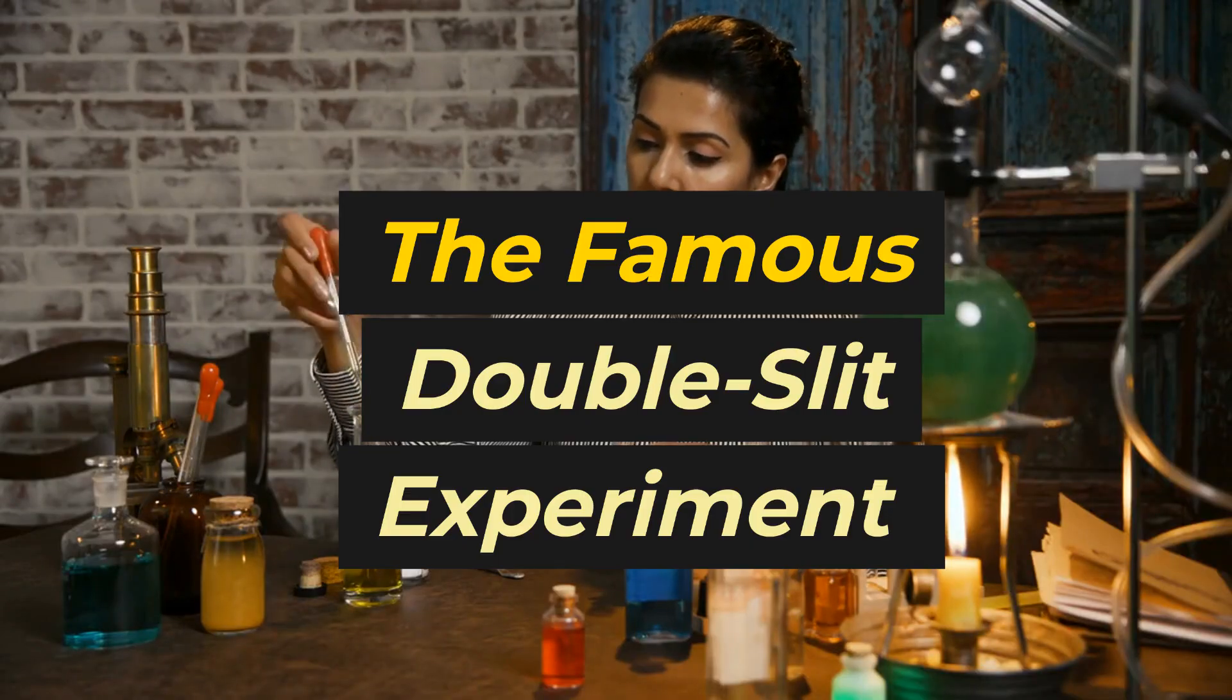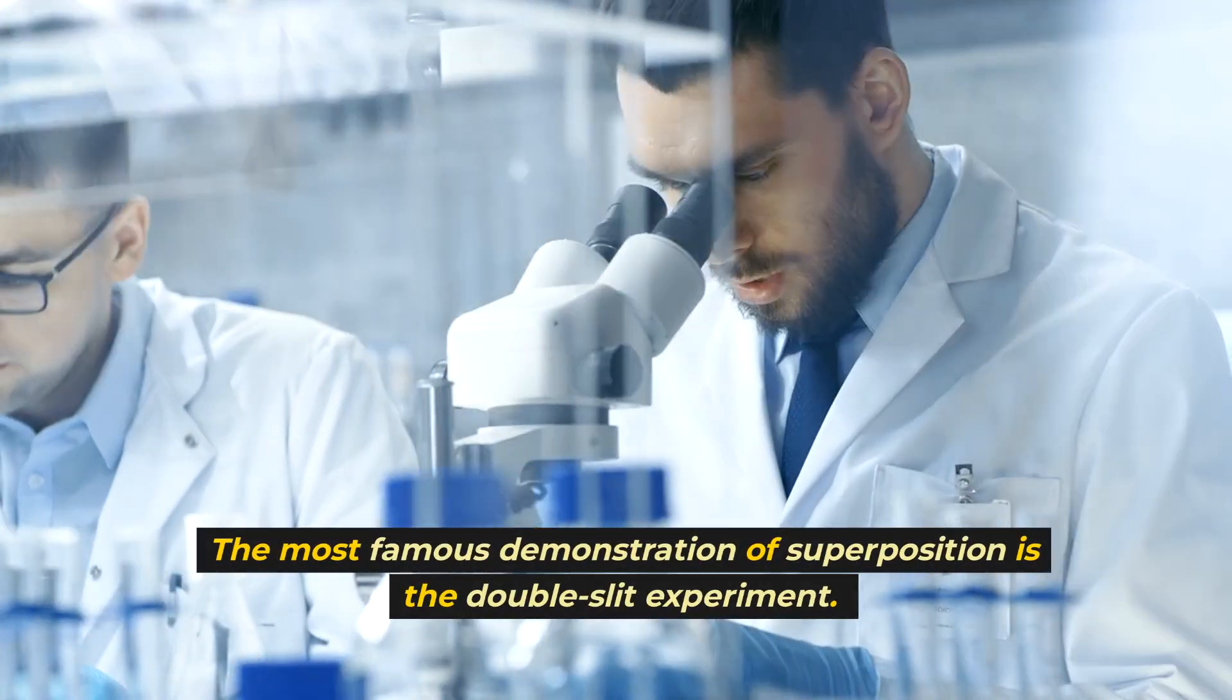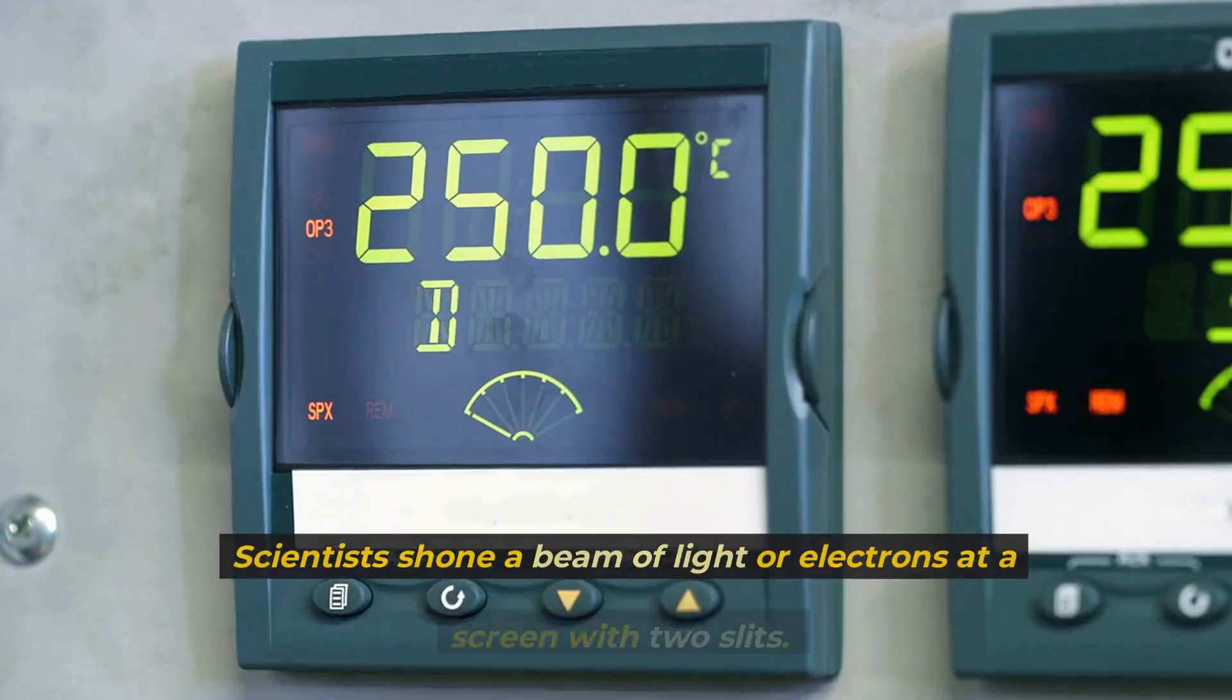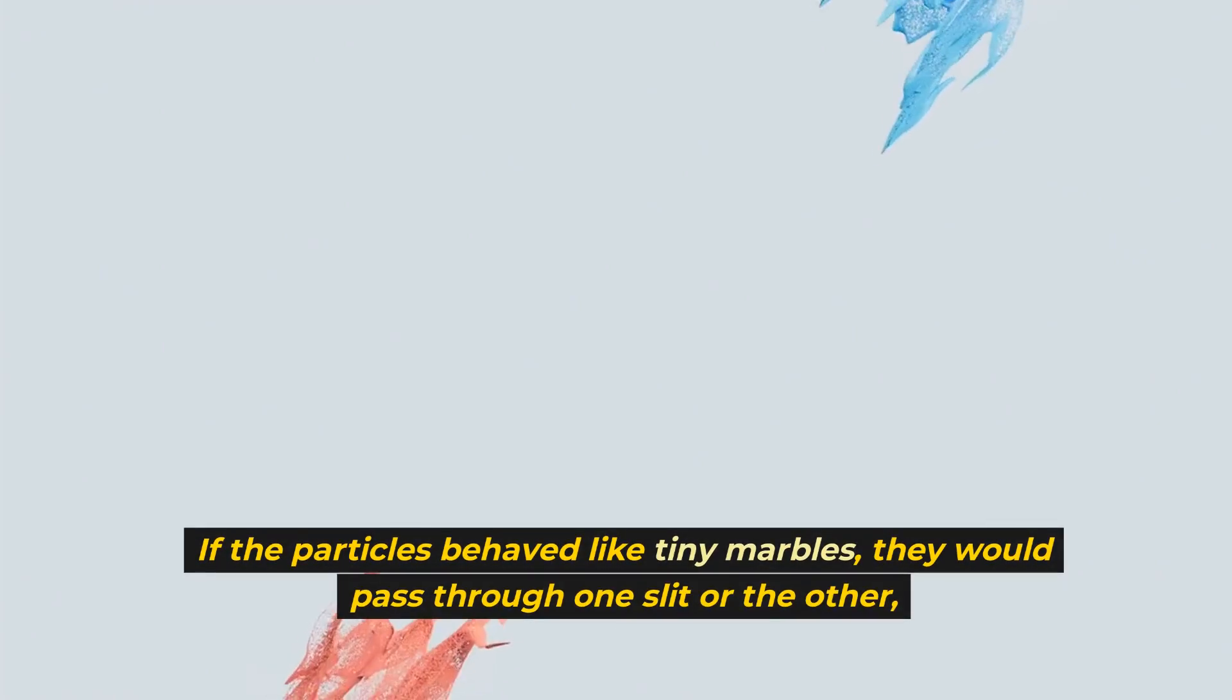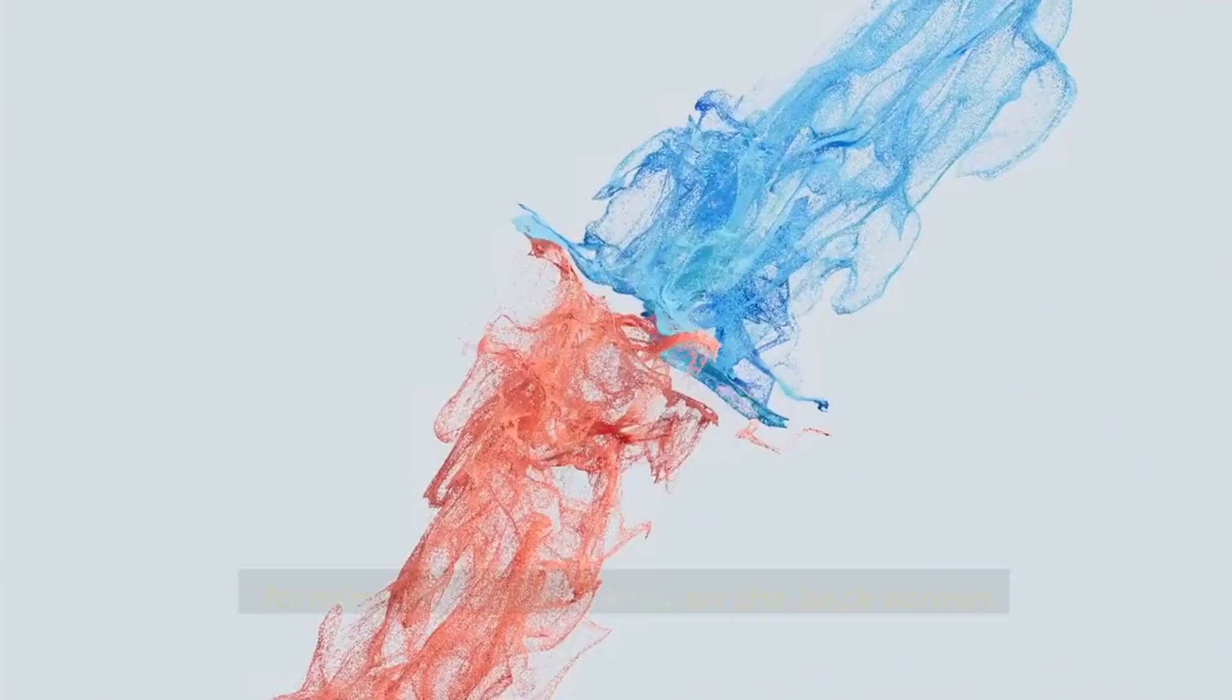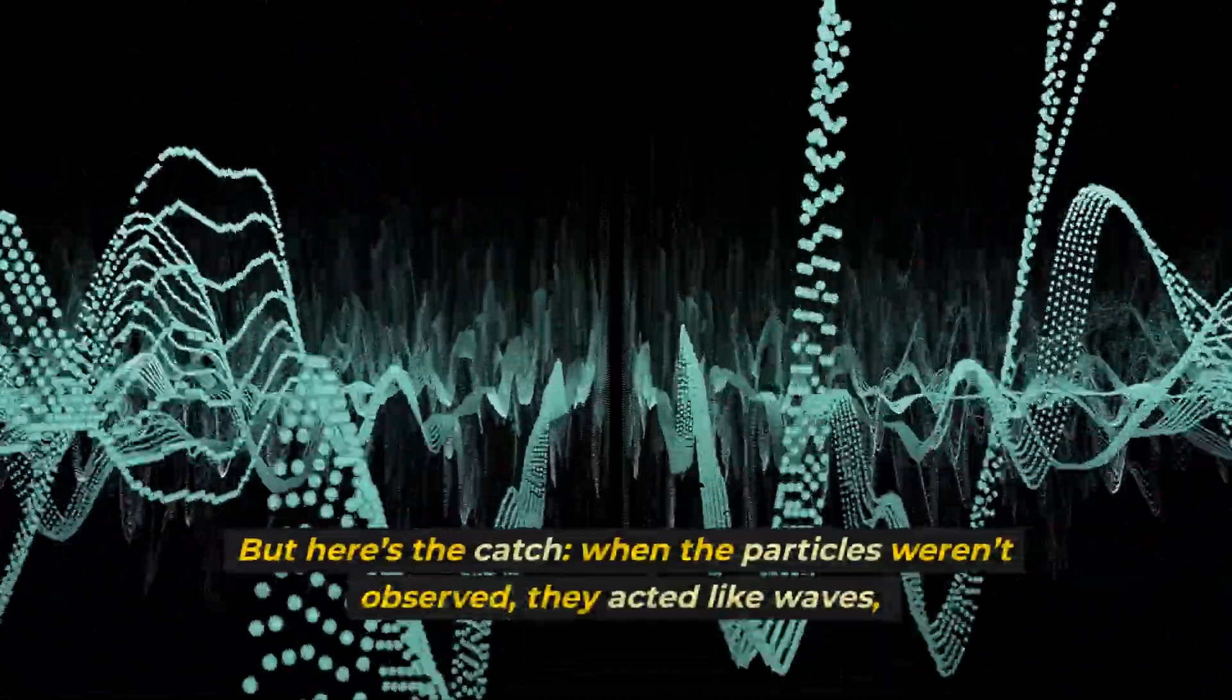The famous double slit experiment. The most famous demonstration of superposition is the double slit experiment. Scientists shone a beam of light or electrons at a screen with two slits. If the particles behaved like tiny marbles, they would pass through one slit or the other, forming two distinct lines on the back screen. But here's the catch.